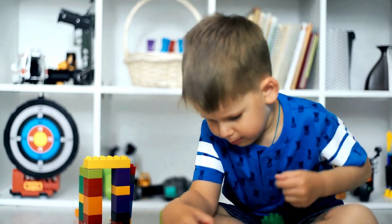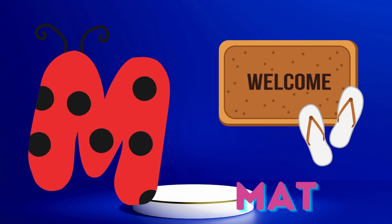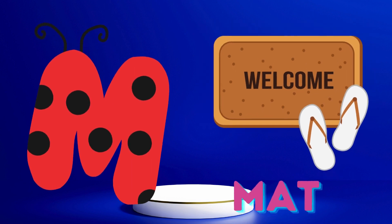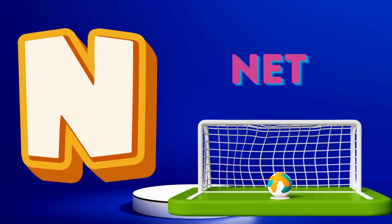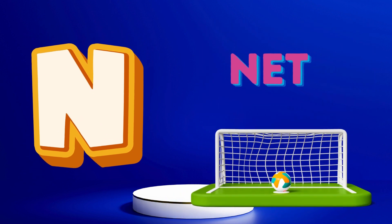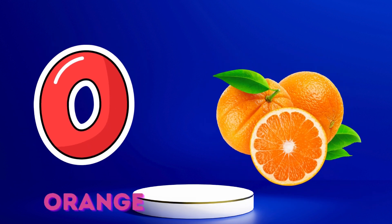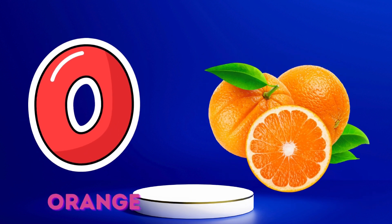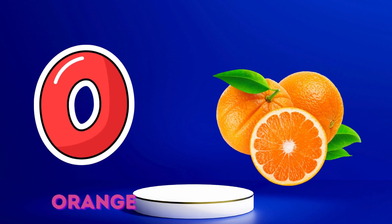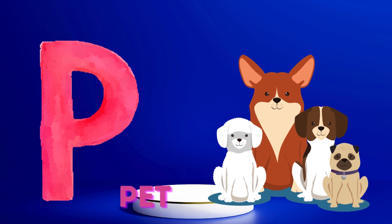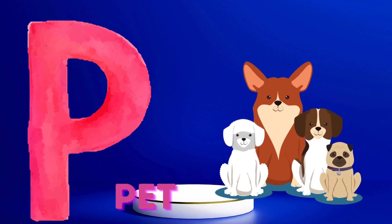M is for Mat. M-M-Mat. N is for Net. N-N-Net. O is for Orange. O-O-Orange. P is for Pet. P-P-Pet.